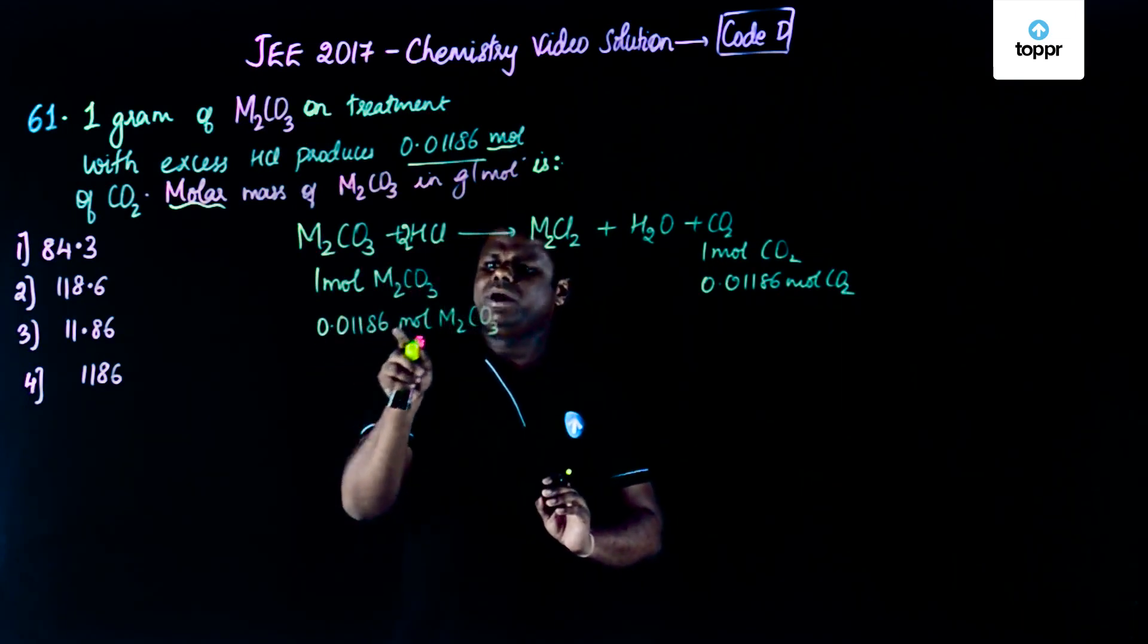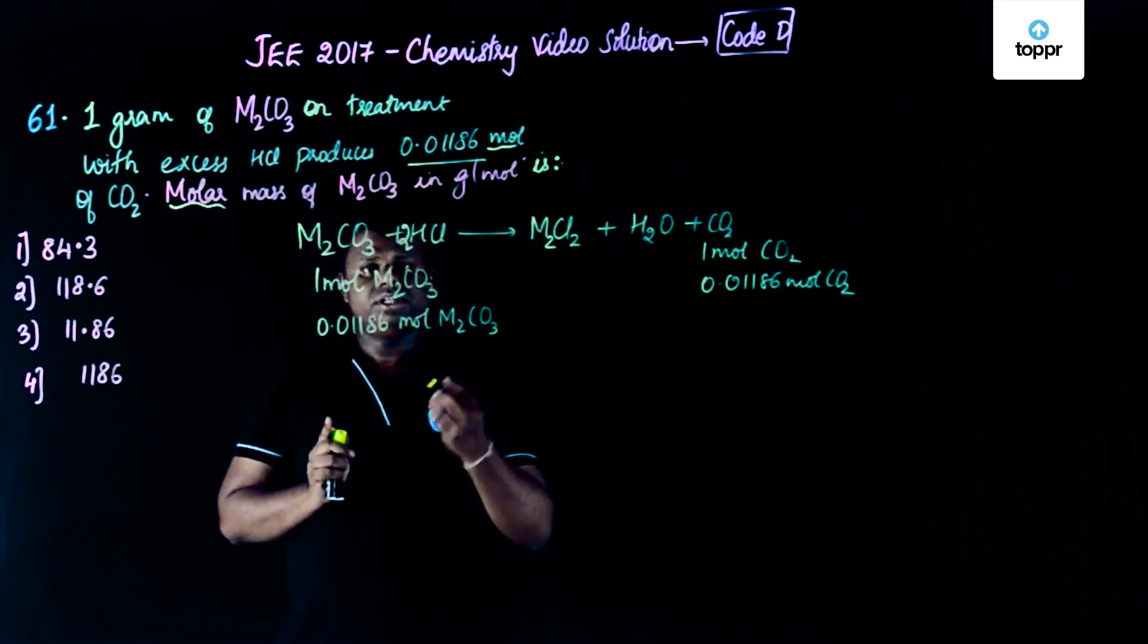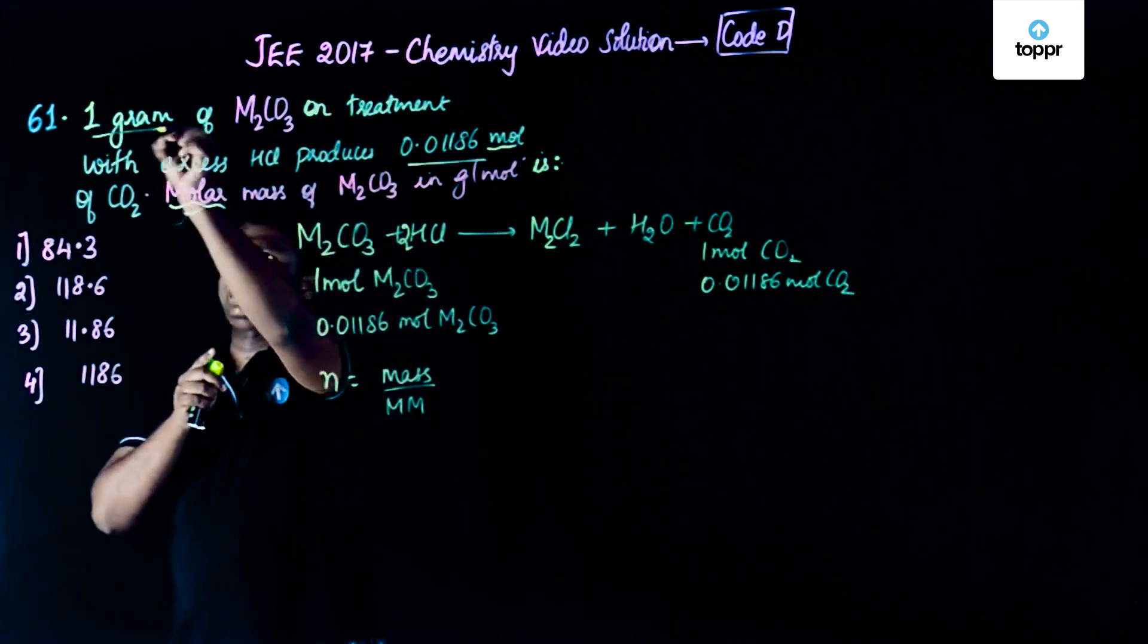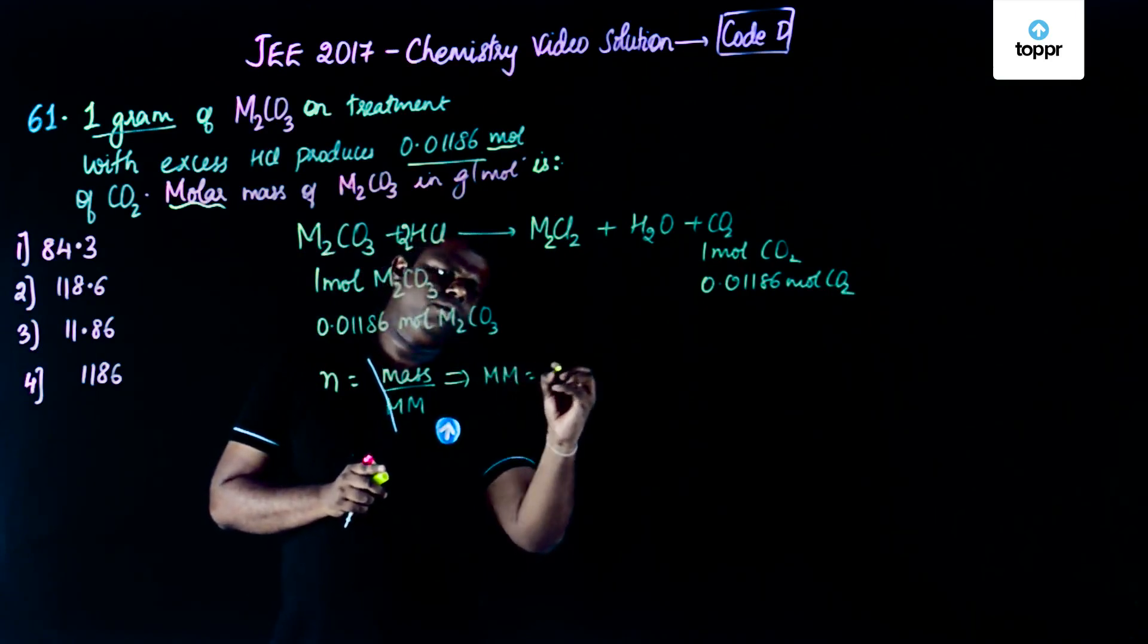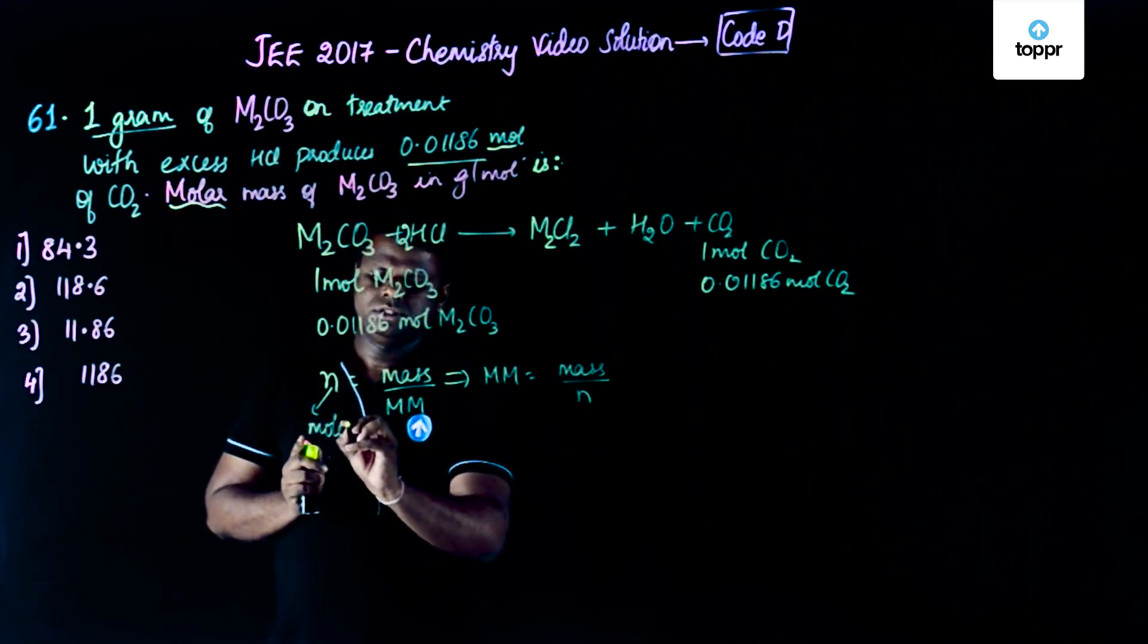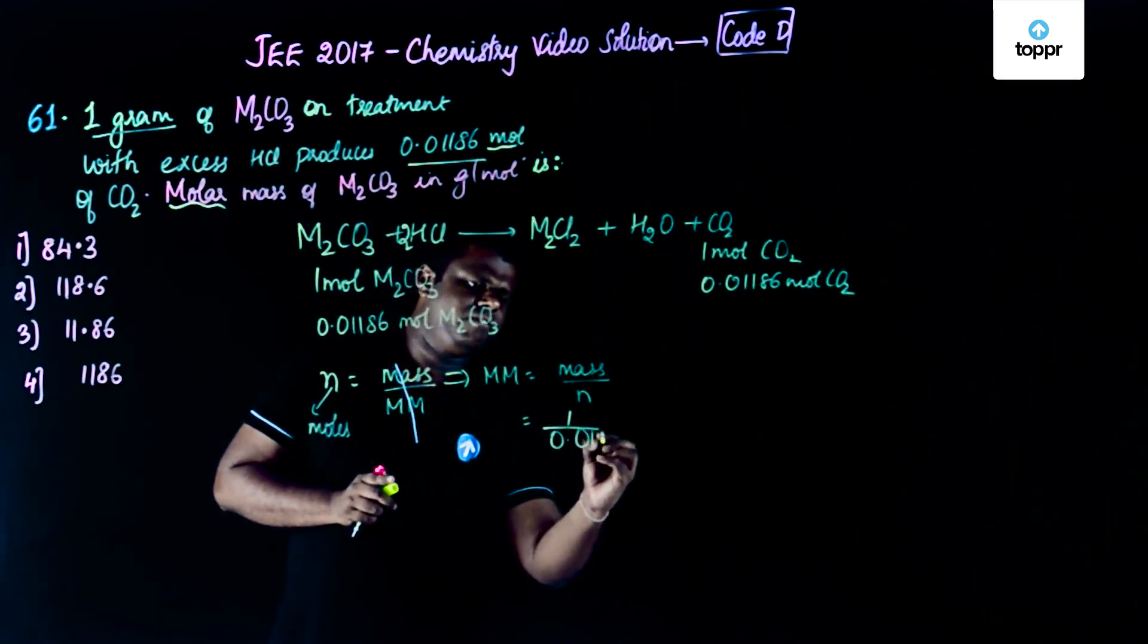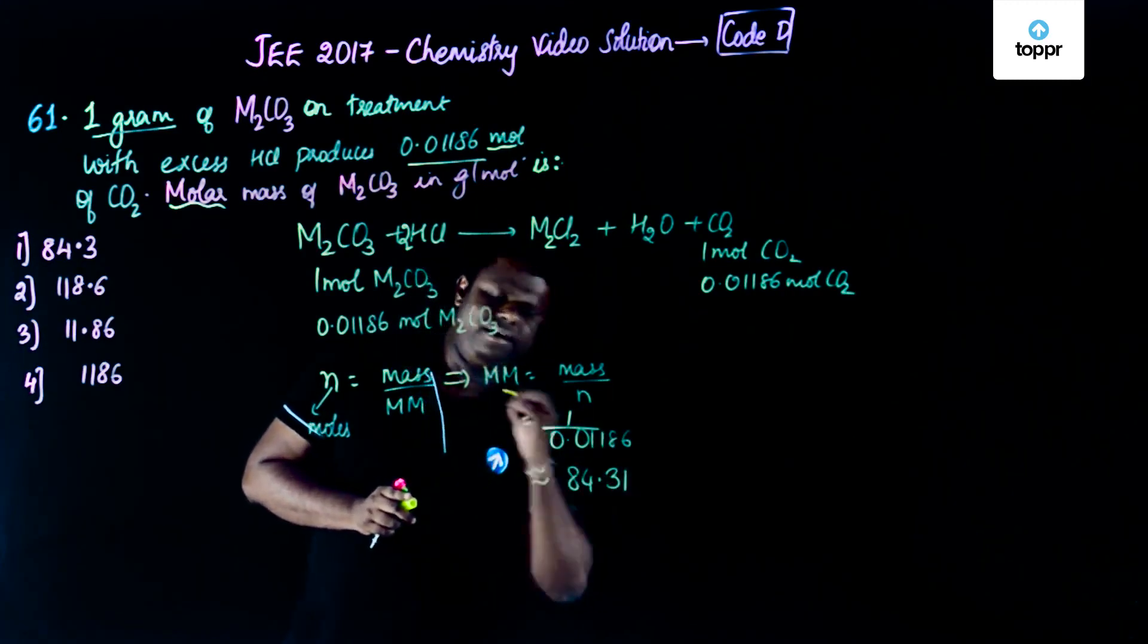0.01186 moles of M2CO3. Now we could use a simple formula: number of moles equals mass by molar mass. Mass is given as 1 gram. So I could simply write molar mass equals mass upon number of moles, where n is nothing but moles. This is a standard notation. So mass is 1 and the number of moles is 0.01186. The answer comes to be something like 84.31.